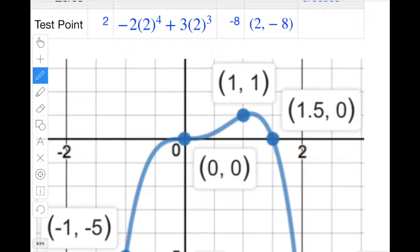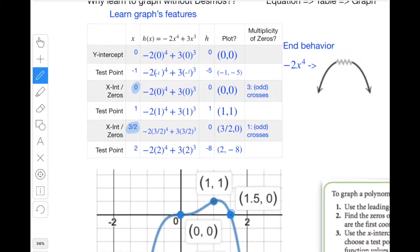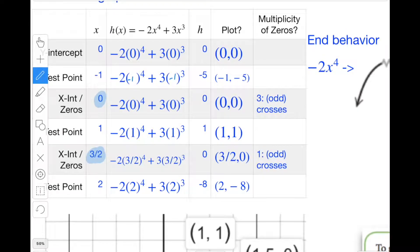We know that because it's a zero, it's going to break up the graph into parts that are below and parts that are above. And so you can plot the zero, you know that it's at (0,0), you know that it's at (1.5,0). And you know that it's going to cross both of these. The graph is going to cross the x-axis at both of those zeros. The multiplicity is three and it's odd, so therefore it crosses. The multiplicity is one, so therefore it crosses.